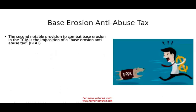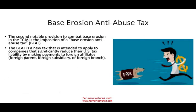BEAT is the second provision to combat base erosion after GILTI. It is a new tax system intended to apply to companies that significantly reduce their U.S. tax liability by making payments to foreign affiliates. They're not targeting your revenue — they're going to be examining your expenses, specifically your tax-deductible expenses. They're going to try to find out how much you are paying to your foreign parent, foreign subsidiary, and foreign branch.